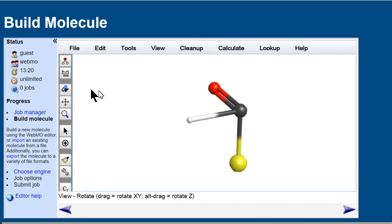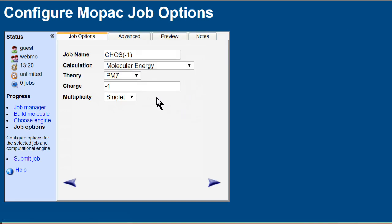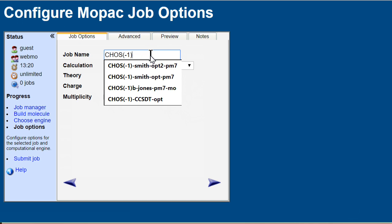MOPAC is the name of the software that has the PM7 as one component. Just use the first available server among several that are online. Enter a job name that includes your name. Choose geometry optimization.